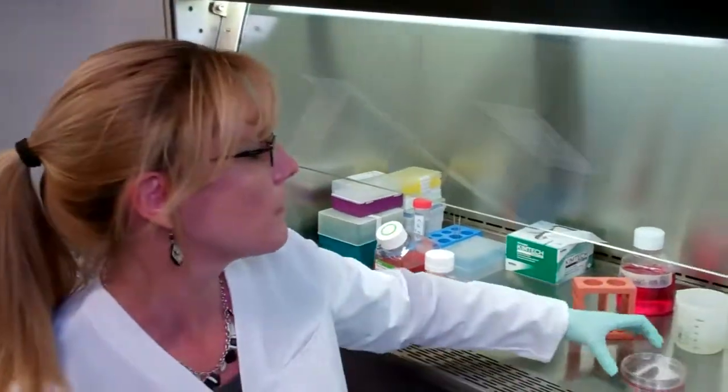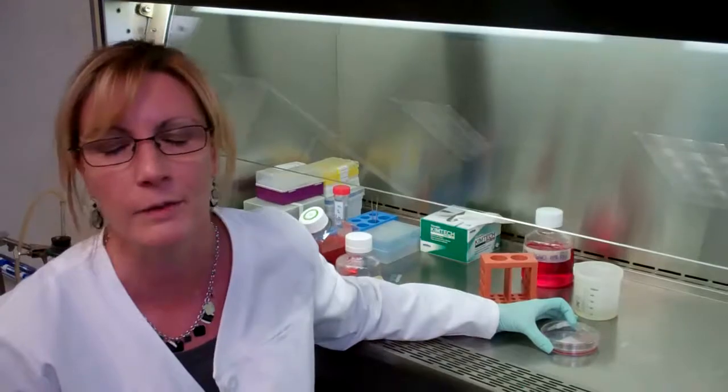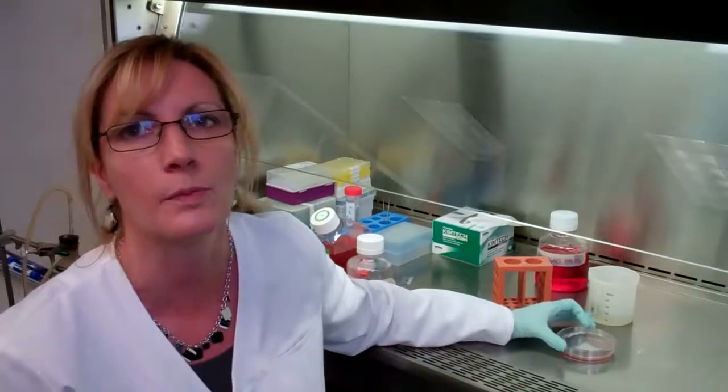Right here we have cells, cancer cells. One of our students was growing. The cells that we grow in these plates are what we call confluent, meaning the plate is full. The cells are all attached and they need to be divided and grown in separate plates so that they don't die.